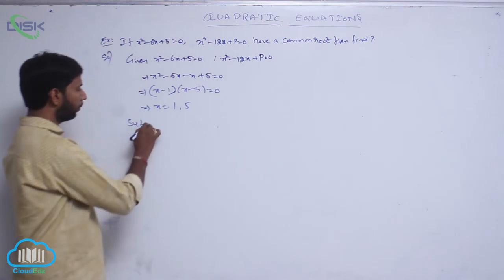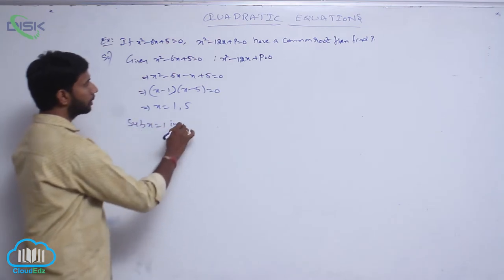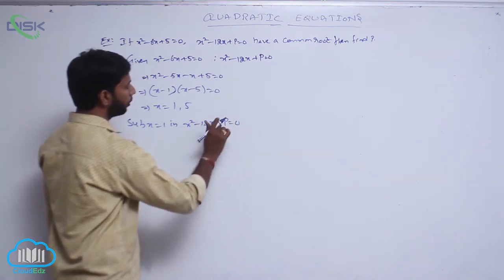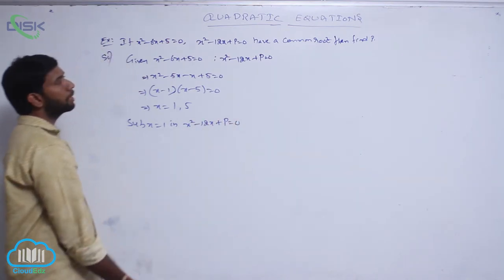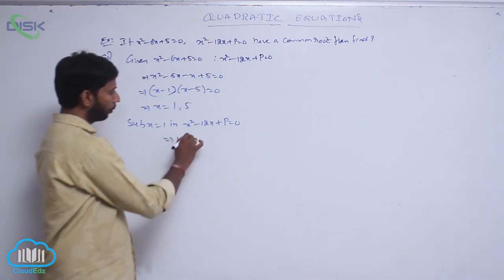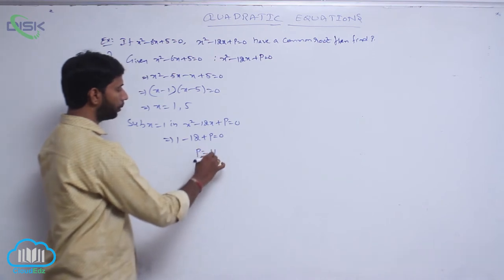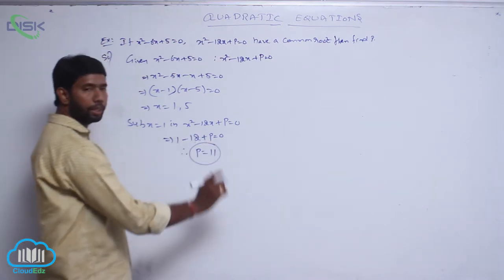Substitute x = 1 in the second equation, x² - 12x + p = 0. Since the equations have a common root, this implies 1 - 12 + p = 0. Therefore, p = 11.